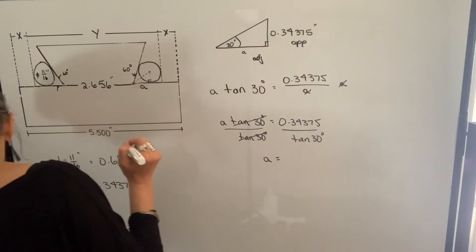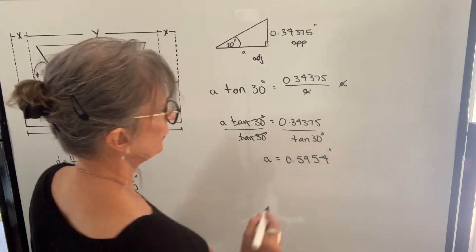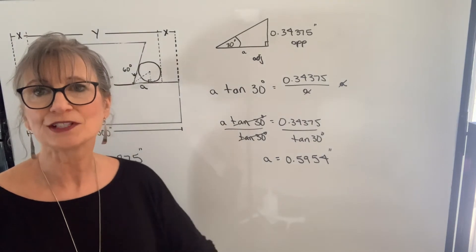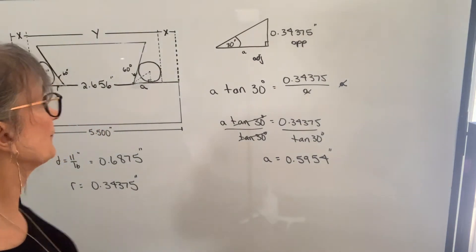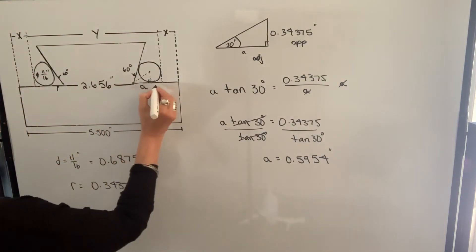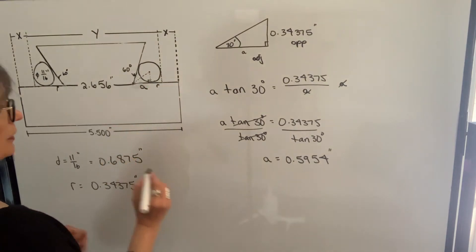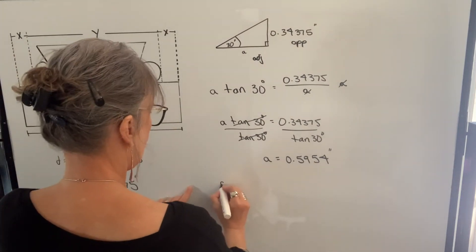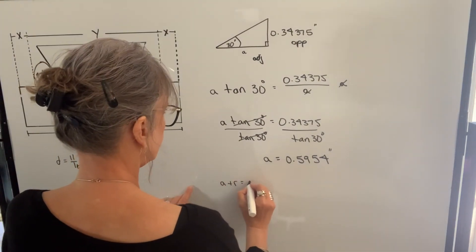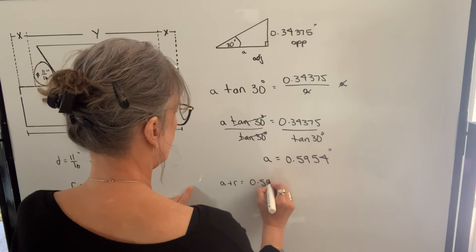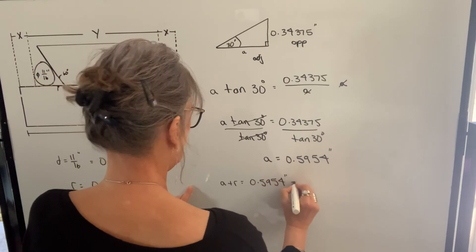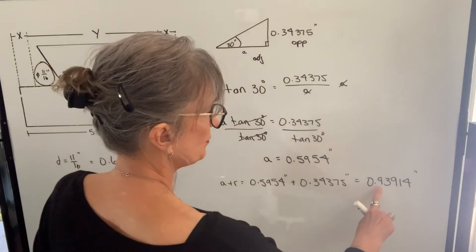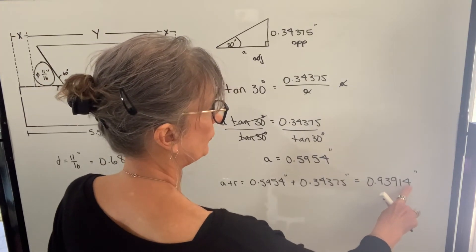And that value is 0.5954 inches. I've rounded off to four decimal places, but I'm going to actually leave that value on my calculator to continue with my calculations. So now that I know A, this value is R, and I know R is 0.34375. This value A plus R will be 0.5954 inches plus 0.34375 inches, which is 0.93914 inches.